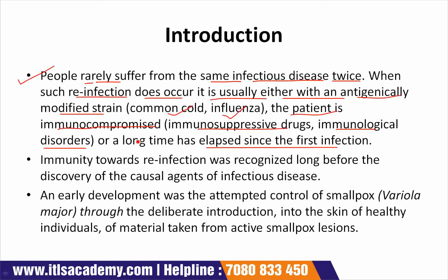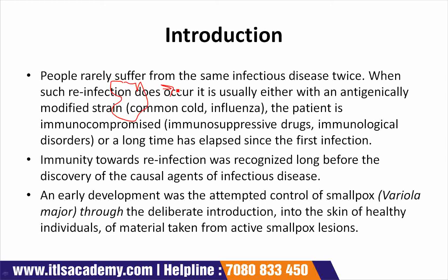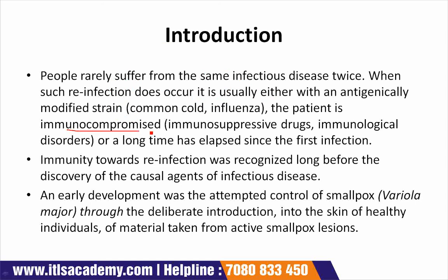Two cases are given in which people can be infected by the same infectious disease twice. The first case is infection from the same antigen but of a modified strain — although it is the same species, the strain has been modified. The second case is an immunocompromised person whose immunity is suppressed due to immunosuppressive drugs or other reasons, making them susceptible to the same disease twice.